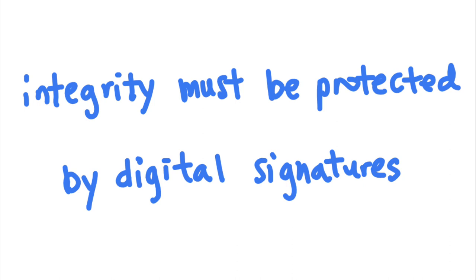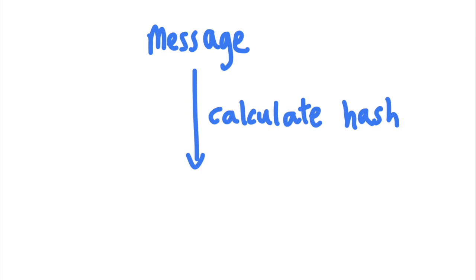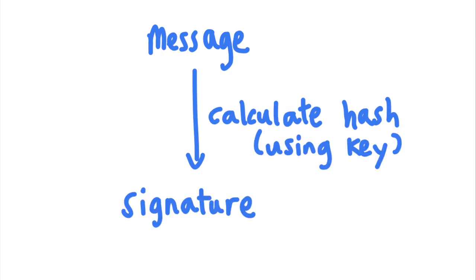SAML usually uses a signature to ensure the integrity of the SAML response, so that attackers cannot tamper with it. Digital signatures are a way to ensure data integrity — they involve adding a one-way hash of the message using a secret key. At the receiving end, the contents of the message are hashed again using the same key. Since the attacker does not have the secret key, they cannot calculate the correct hash, and therefore cannot falsify the contents of the message.